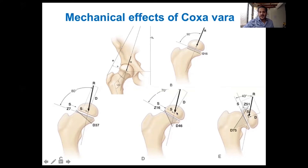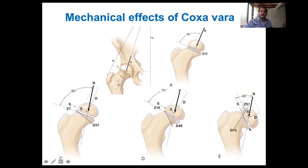But when coxa vara starts to develop, the orientation of the physis gradually becomes more vertical, losing its perpendicular relationship with the resultant compressive force. This creates more compression on the medial part of the physis and more tension on the lateral part. This differential growth inhibits growth on the medial and inferior side, further increasing the coxa vara effect. The slanting of the physis also creates more shear forces at the physeal line, which tend to cause earlier ossification of the physis.